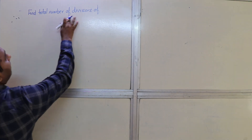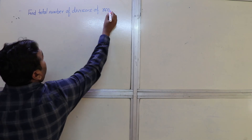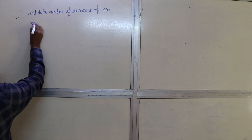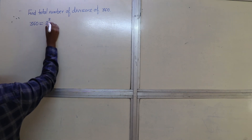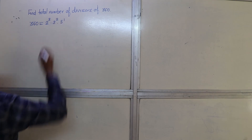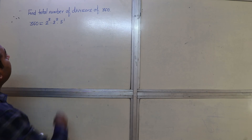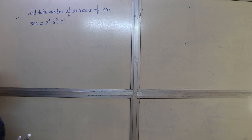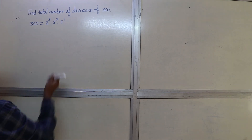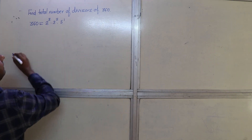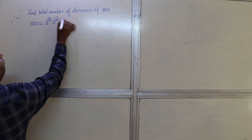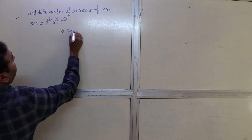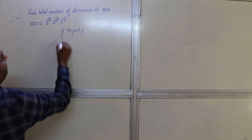Find the total number of divisors of 360. First, factorize 360: 360 = 2 cubed × 3 squared × 5 raised to 1. So we can say there are 3 identical objects of the first kind (the 2s), 2 identical objects of the second kind (the 3s), and 1 different object (the 5). Total objects: 3 + 2 + 1 = 6 objects of three kinds.